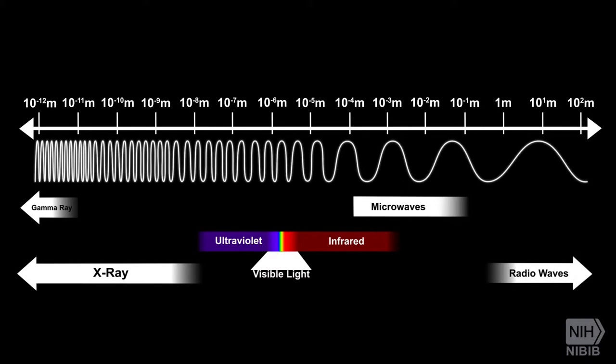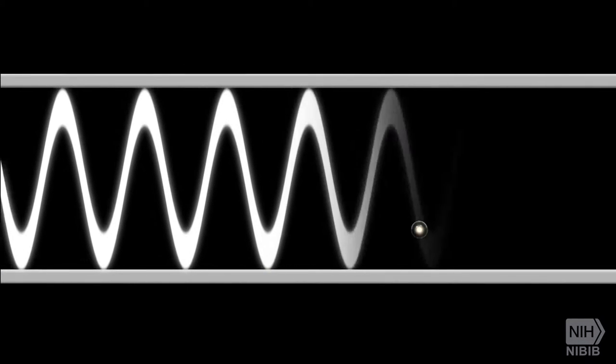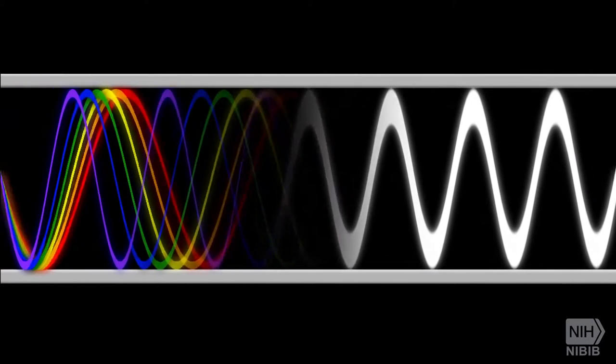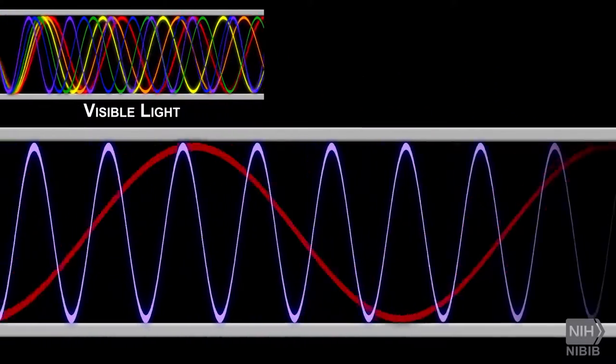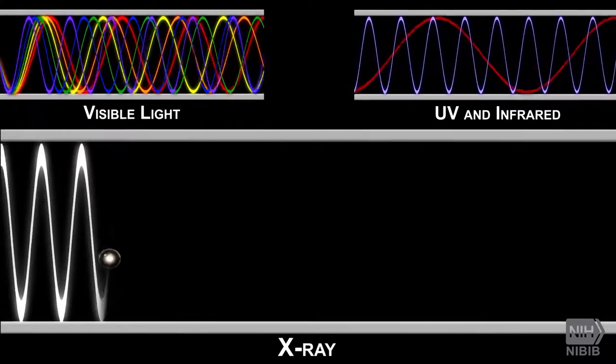Light is a form of electromagnetic radiation. At some wavelengths, it appears as visible light. At others, it takes the form of radiation we cannot see, such as ultraviolet, infrared, and x-rays.